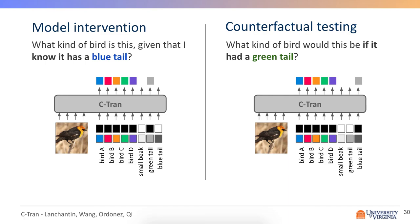So the two main use cases of this model are intervention and counterfactual testing. So in model intervention, we tell the model that we know the bird, for example, has a blue tail, and we ask it to predict the species. And in counterfactual testing, we ask what kind of species would this be if it had a green tail?